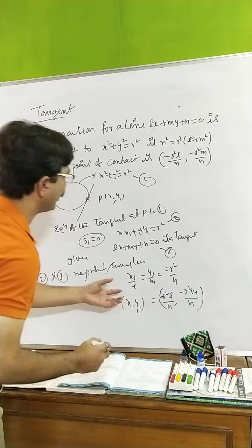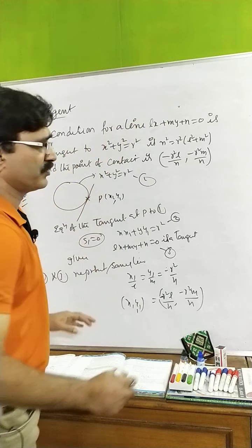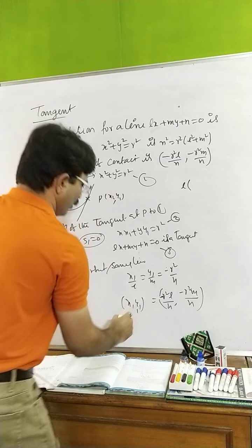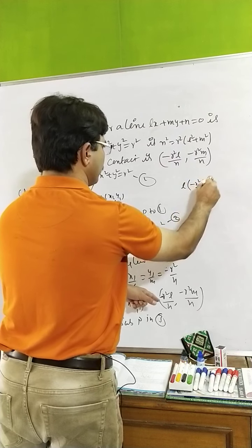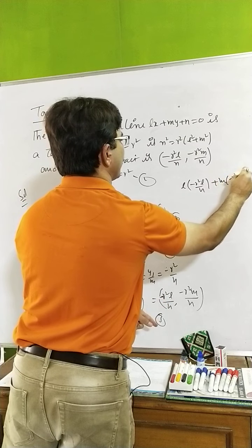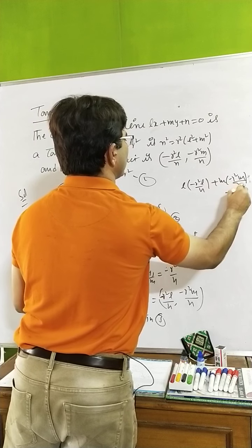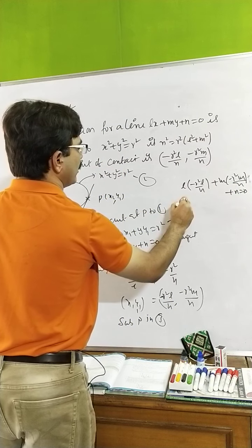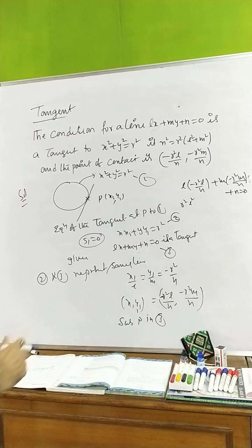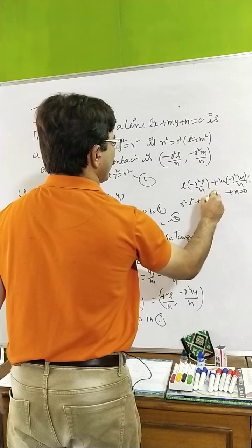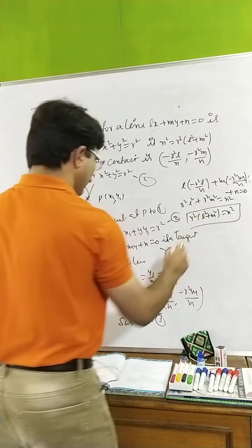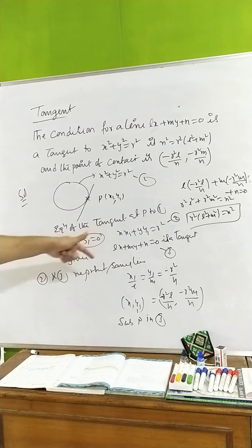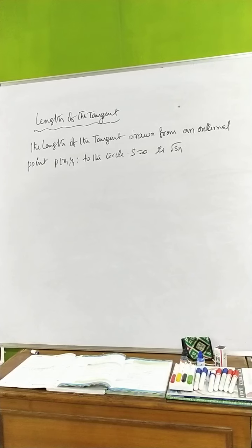Substituting P(x1, y1) in the line equation: l·(-r²l/n) + m·(-r²m/n) + n = 0, giving r²l² + r²m² = n², which simplifies to r²(l² + m²) = n². This comparison method is very important to find the point of contact.